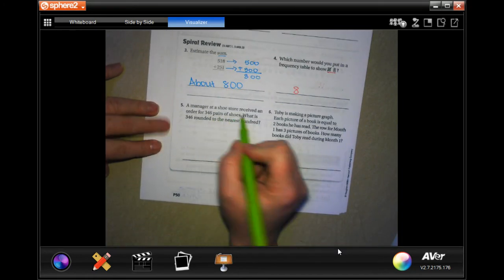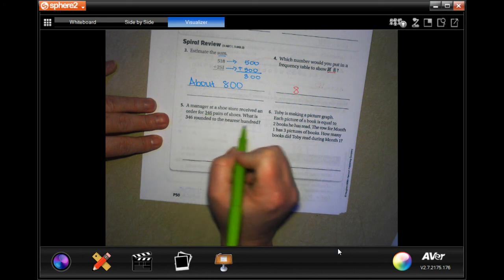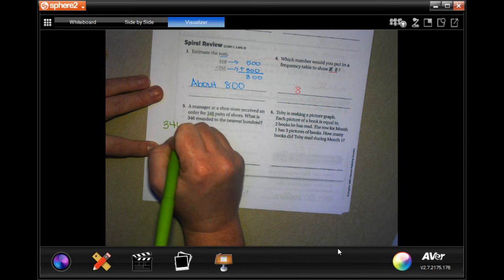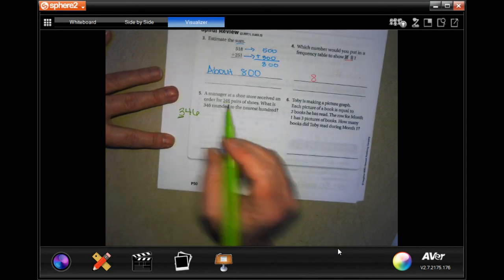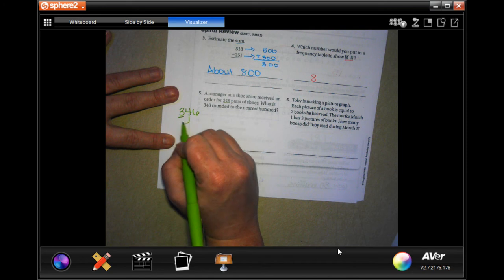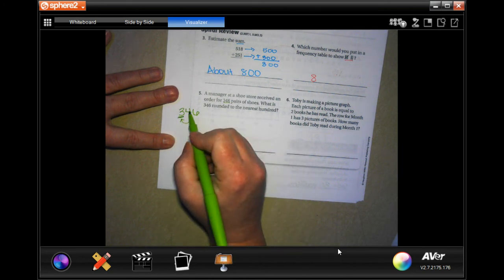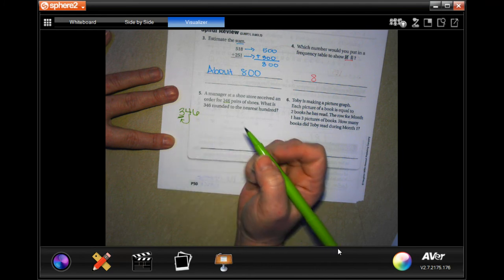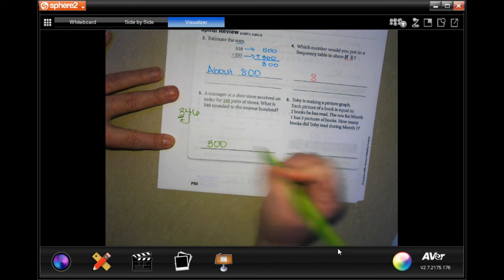A manager of a shoe store received an order for 346 pairs of shoes. What is 346 rounded to the nearest hundred? Well, we want to know round to the nearest hundred. So we have to look at the next number, and if it's 5 or bigger, then that's going to go up to a 4. If it's 4 or smaller, then it's going to stay a 3. Well, 4 is smaller than 5, so we're going to round to 300.